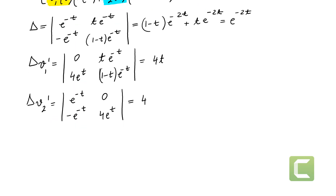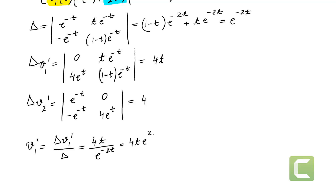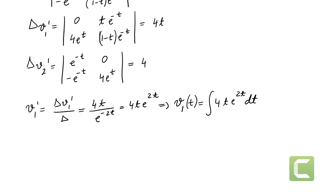By Cramer's rule, v1' = delta_v1' / delta = -4t / e^(-2t) = -4t·e^(2t). Therefore v1(t) = integral of -4t·e^(2t) dt. Similarly, v2' = delta_v2' / delta = 4 / e^(-2t) = 4e^(2t), so v2(t) = integral of 4e^(2t) dt.